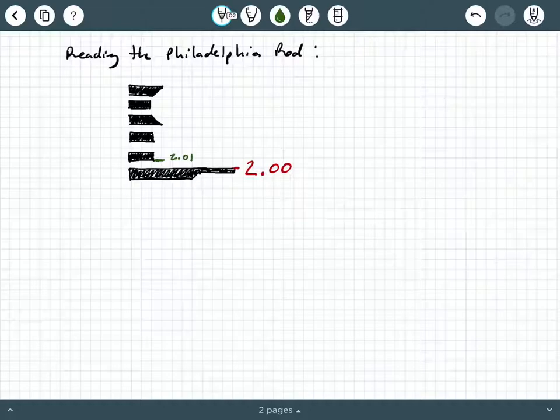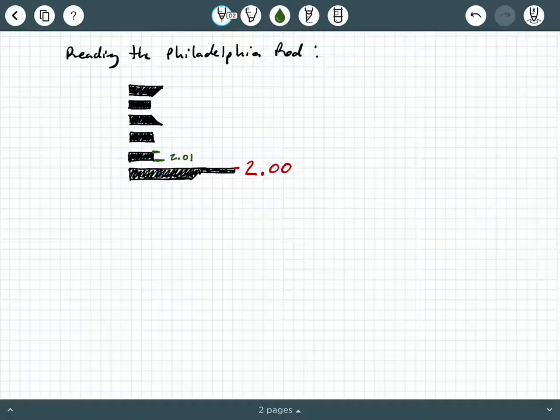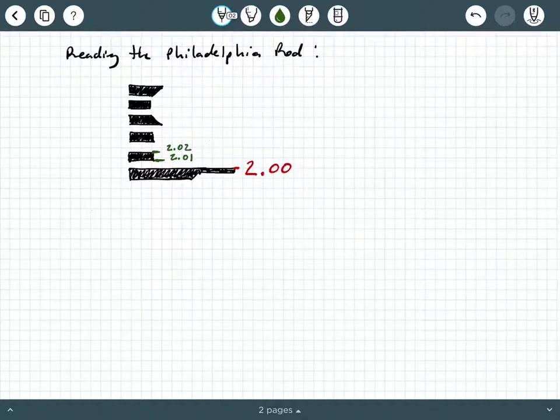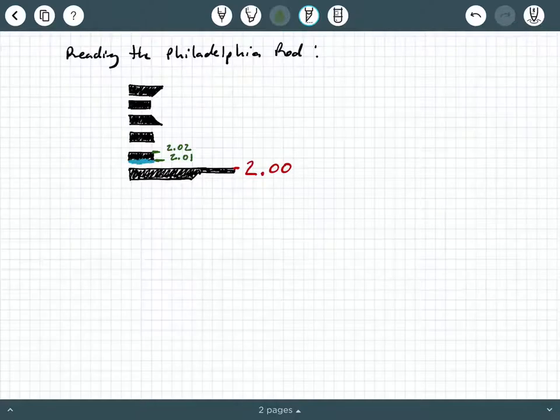2.01 feet. Now the measurement at the top surface of that first black rectangle is equal to 2.02 feet. So basically what you're looking at is each of these black tick marks, the bottom surface represents an odd hundredths place, and the top surface represents an even hundredths place.